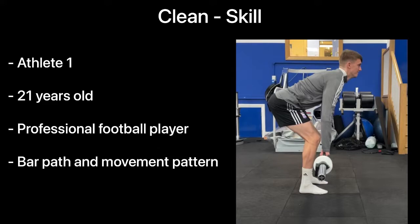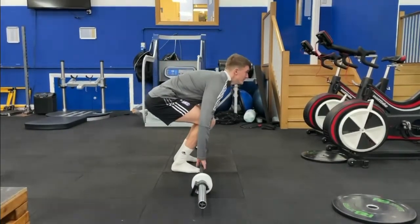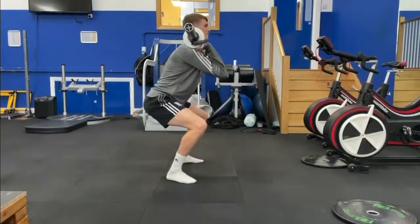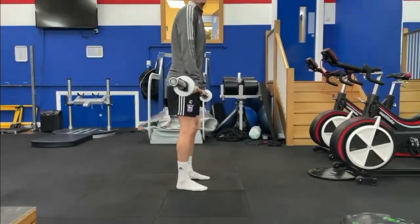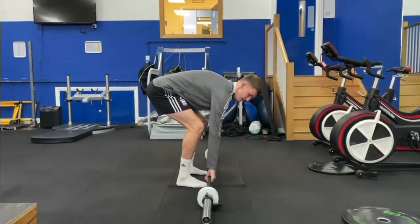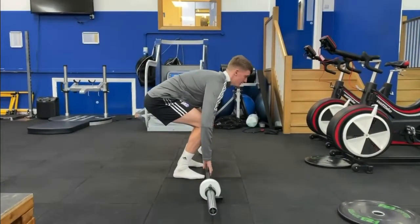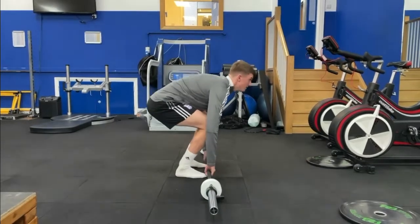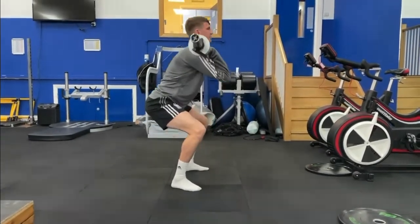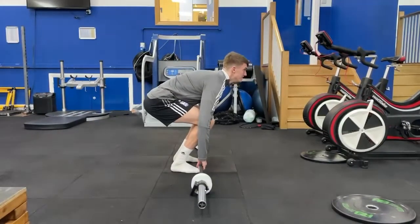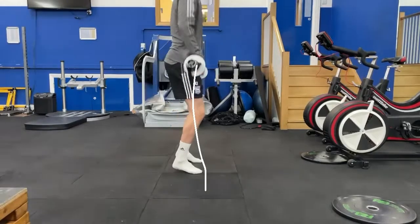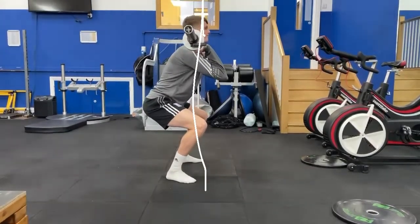Athlete 1 had a skill issue with the clean — the bar path and movement pattern as you will now see. As the athlete performs the clean, we can see several issues. In the start position, the scapula is not pulled back and down, which allows the back to not be in a neutral position and more of a curved shape. The hips are high, the bar is close to the shins, however the chest is not visible from the front. When looking at the bar path in slow motion, we see the bar travels slightly backwards in the first pull and obtains an S-shape, although minimal.